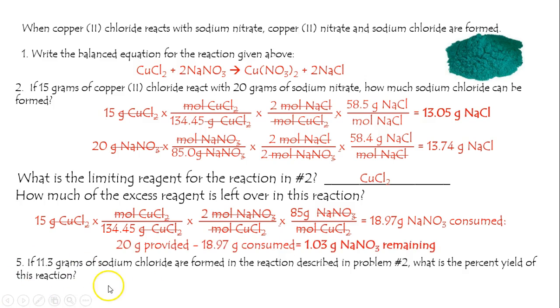Next question, if 11.3 grams of sodium chloride are formed, not bad considering you made most of your theoretical yield of 13.05 grams, what's the percent yield? I'm going to say 80 percent-ish, 11 out of 13.